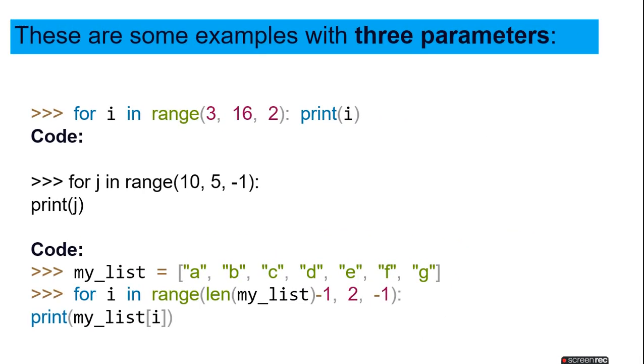These are some examples with three parameters. For i in range 3, 16, 2. 3 is the start, 16 is the stop, and 2 is the step position. Print i. It will print the values 3, 5, 7, 9, 11, 13, and 15. Each time it will add 2 to the start position and give you the output.